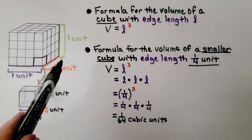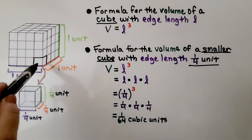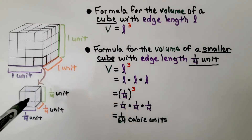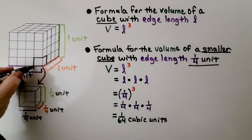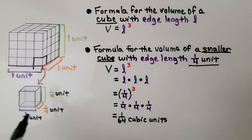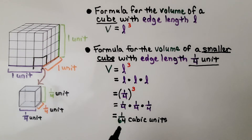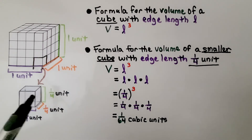The large cube has length, width, and height of 1 unit each — 1 times 1 times 1 equals 1 cubic unit. For the smaller cube pulled out, with an edge length of 1/4 unit, its length, width, and height are each 1/4. So its volume is 1/4 times 1/4 times 1/4. One-fourth times 1/4 is 1/16, and 1/16 times 1/4 is 1/64. This one little cube has a volume of 1/64 cubic units, meaning there are 64 of these small cubes inside the larger cube.